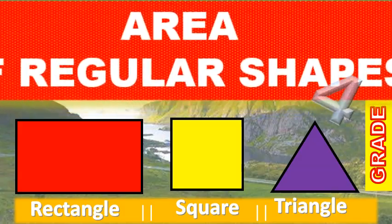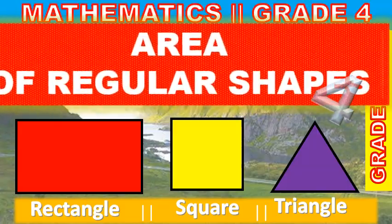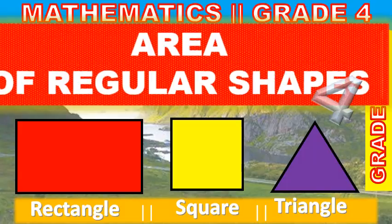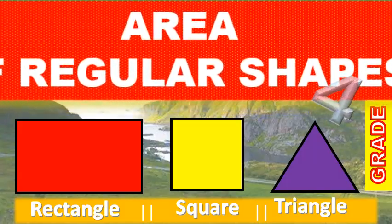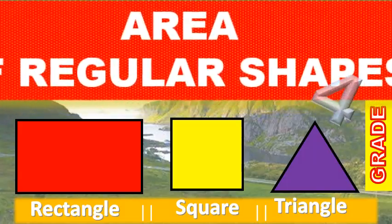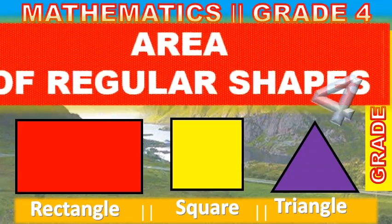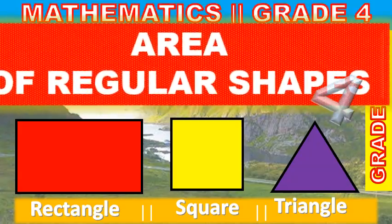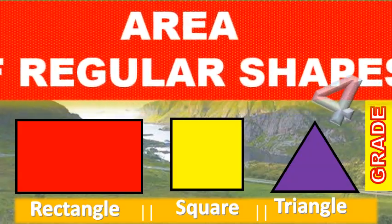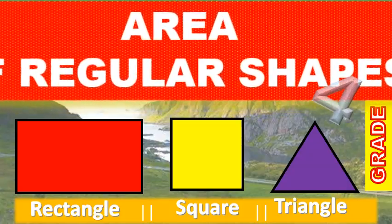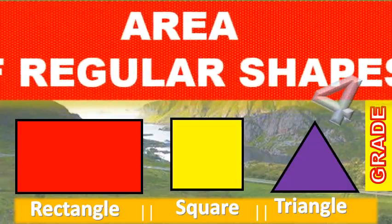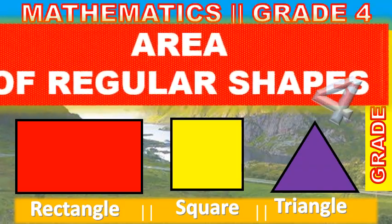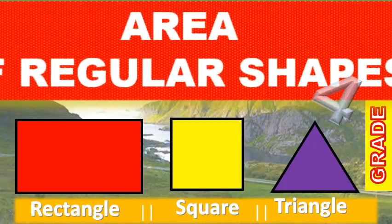Remember, the units used to measure the area of a rectangle are square meters or square centimeters. For example, the longer side of a rectangle is 8 centimeters long and the shorter side is 4 centimeters. How do we find its area?